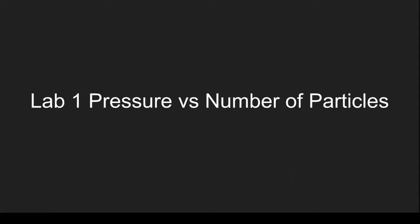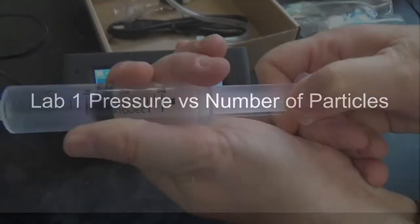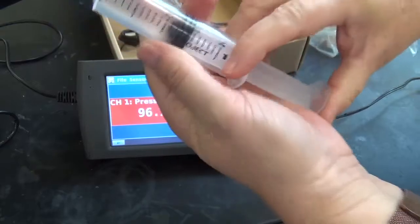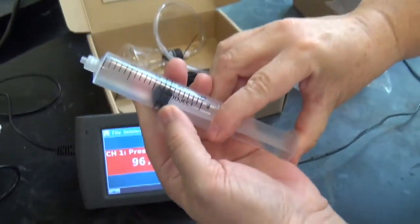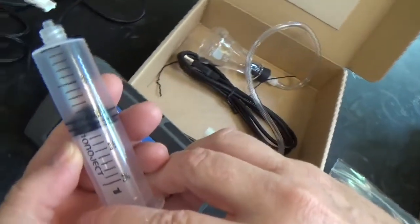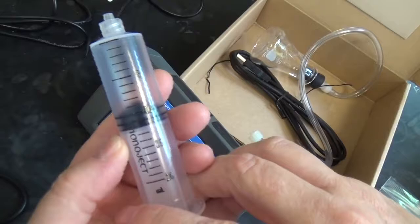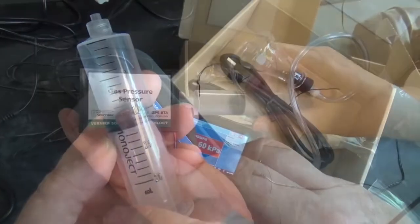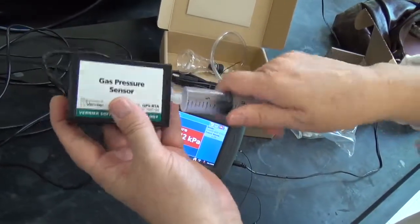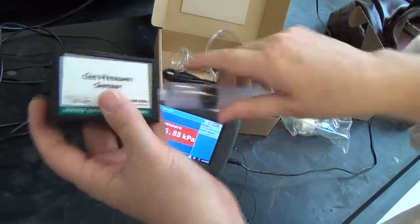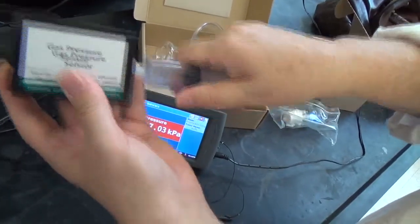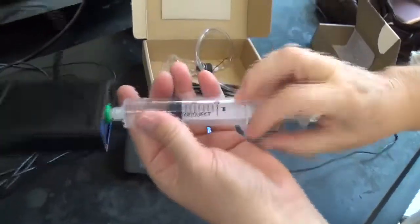Now let's begin our first lab. Begin by adding 10 milliliters of air to your syringe. Once you have 10 milliliters, connect the syringe to the gas pressure sensor using the lure lock connection. Make sure this is finger tight but not so tight that you warp the connection.